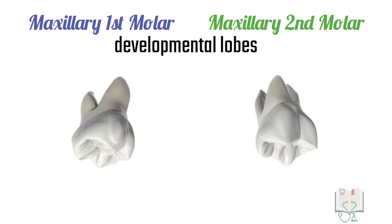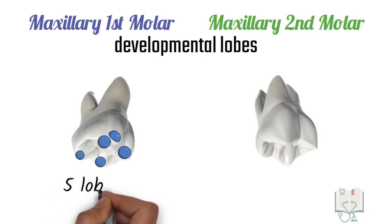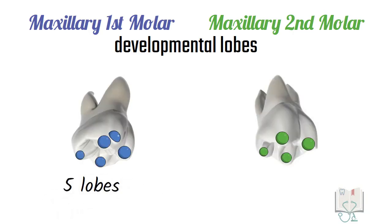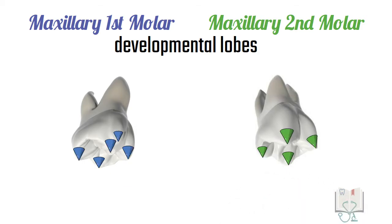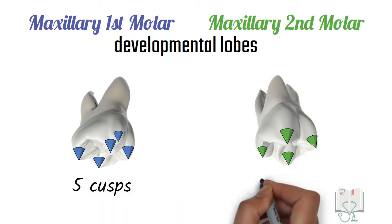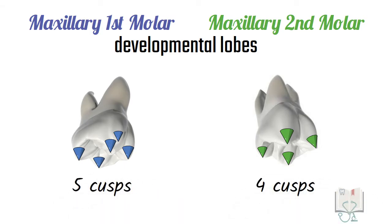Maxillary first molar develops from five developmental lobes whereas second molar from four developmental lobes. This feature results in the difference in the number of cusps: first molar has five cusps, second molar four cusps. Both molars have three roots each.